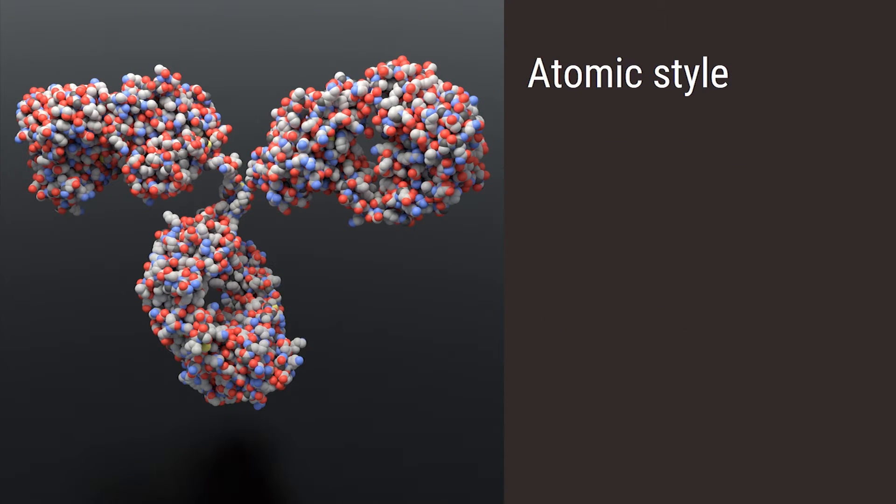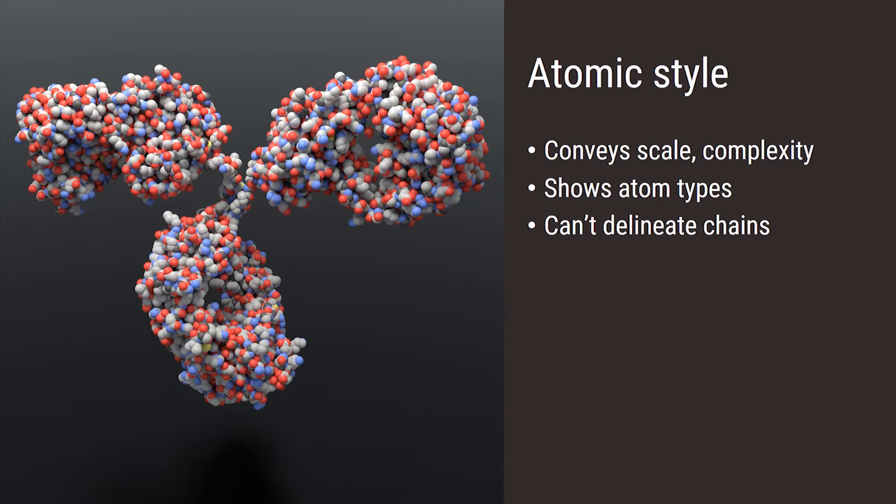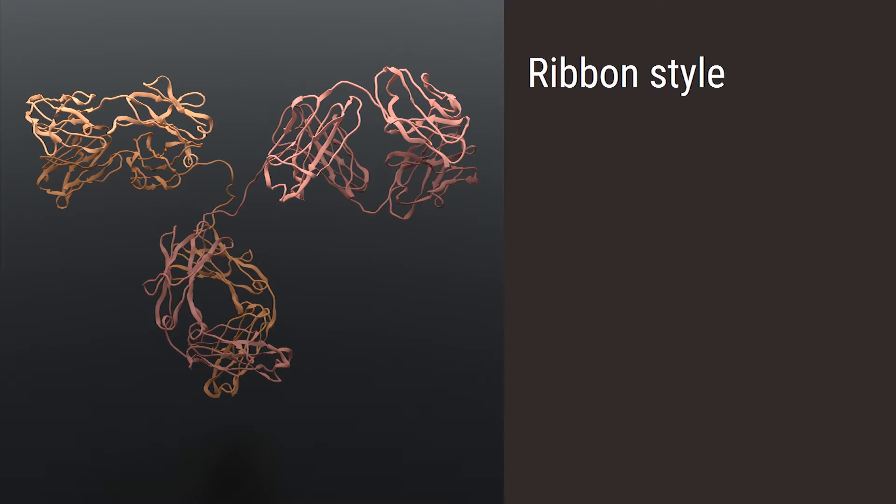We could choose an atomic space-filling representation, which conveys the scale and complexity of a molecule. It also shows the composition of atoms, but here you can't distinguish the heavy chains from the light chains and it's more visually complex than other styles. A ribbon or cartoon representation can highlight structural elements like a flexible linker or a variable region, but the volume is hard to appreciate here, especially with limited depth perception.